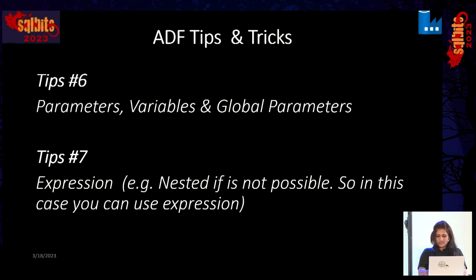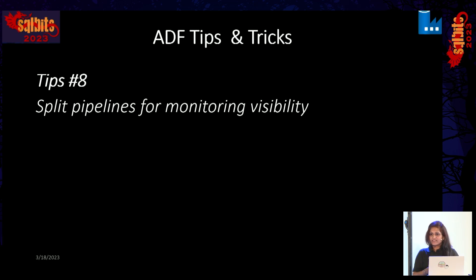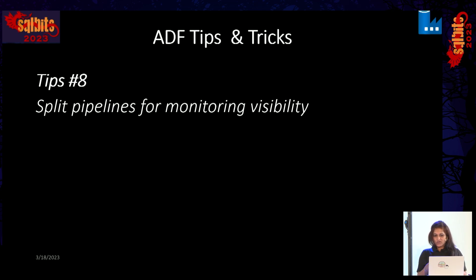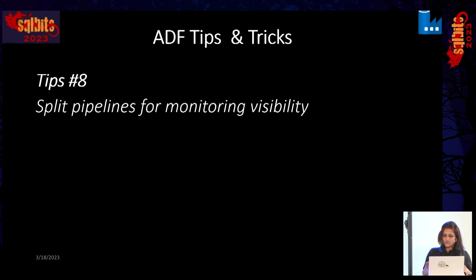Tip eight is to always try to create child pipelines. For example, if you're sending customized emails, keep that email logic in a separate pipeline. When you have five business outcomes in your Azure Data Factory and all of them use that logic, you don't need to duplicate it everywhere — just call the child pipeline from each main pipeline. This also gives you more visibility for troubleshooting: execute the child pipeline independently to confirm it works, then check the parent pipeline logic.